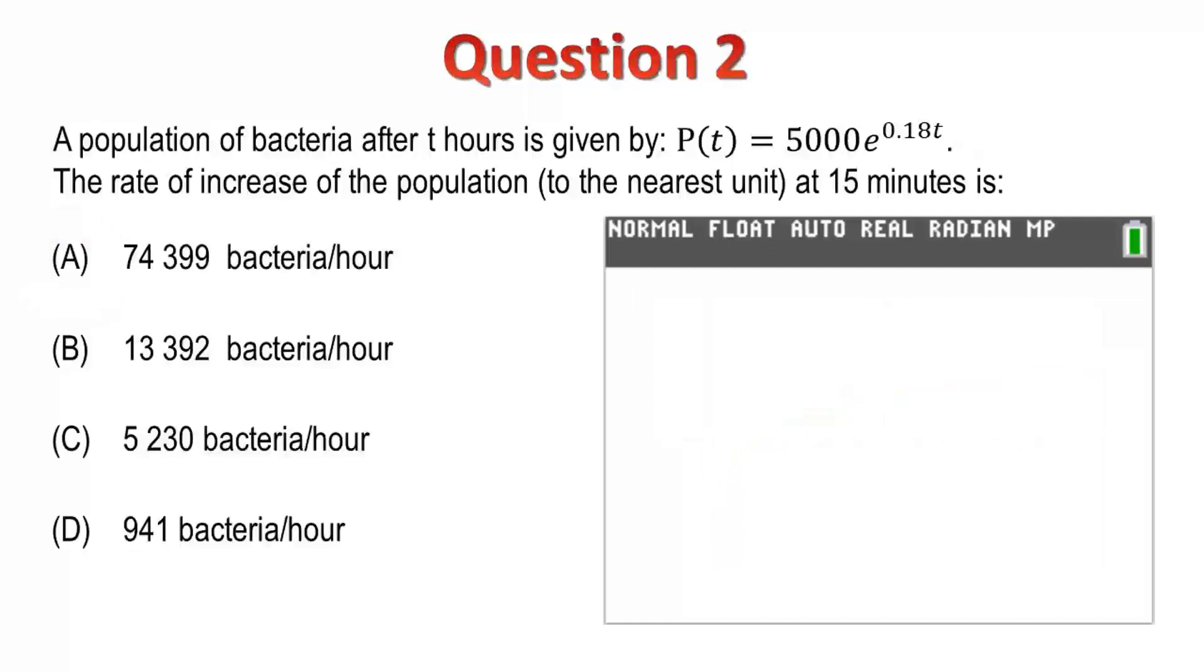Question 2. The population of bacteria after t hours is given by a function p. We're asked to find the rate of increase of the population at t equals 15 minutes. So, some important things to consider here. We're asked for the rate of increase, which is dp dt. And also, the function refers to t as hours, and yet we're asked to find it after 15 minutes.